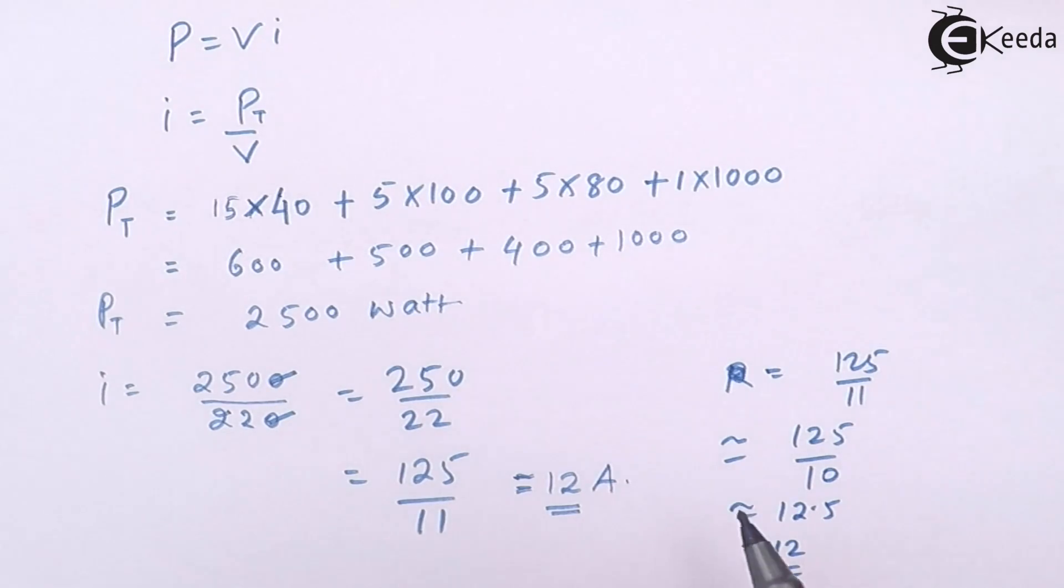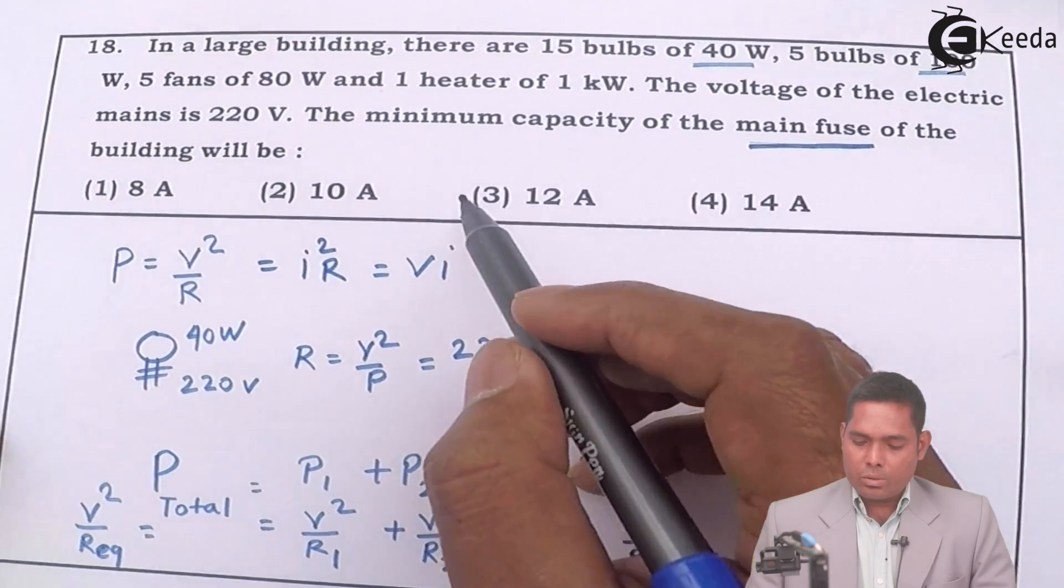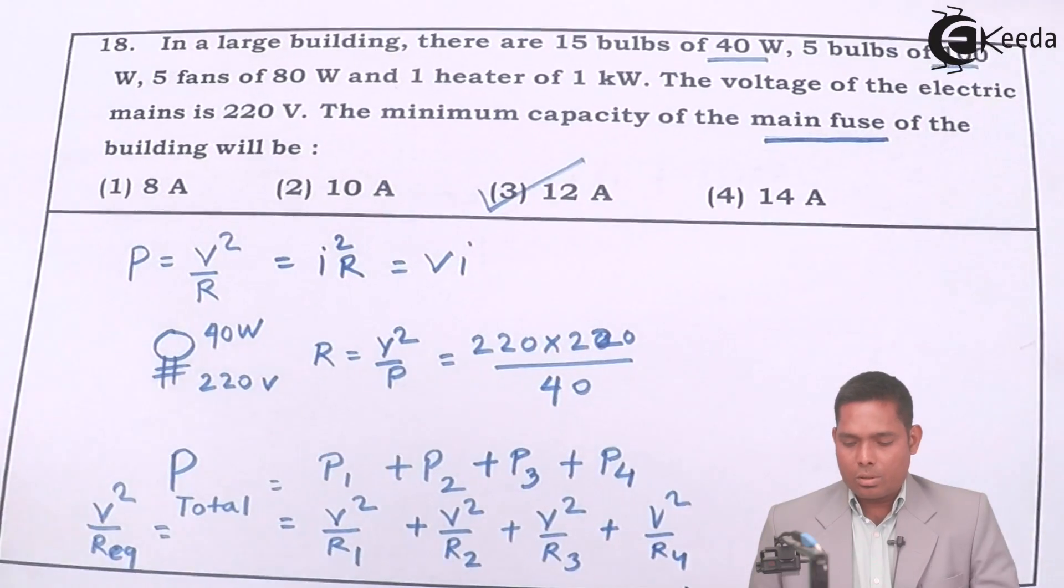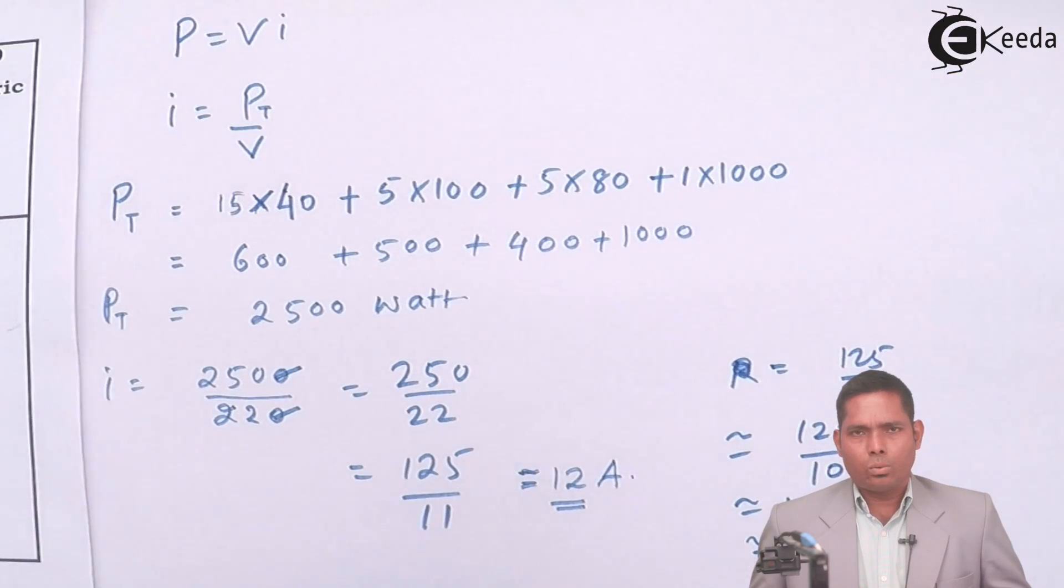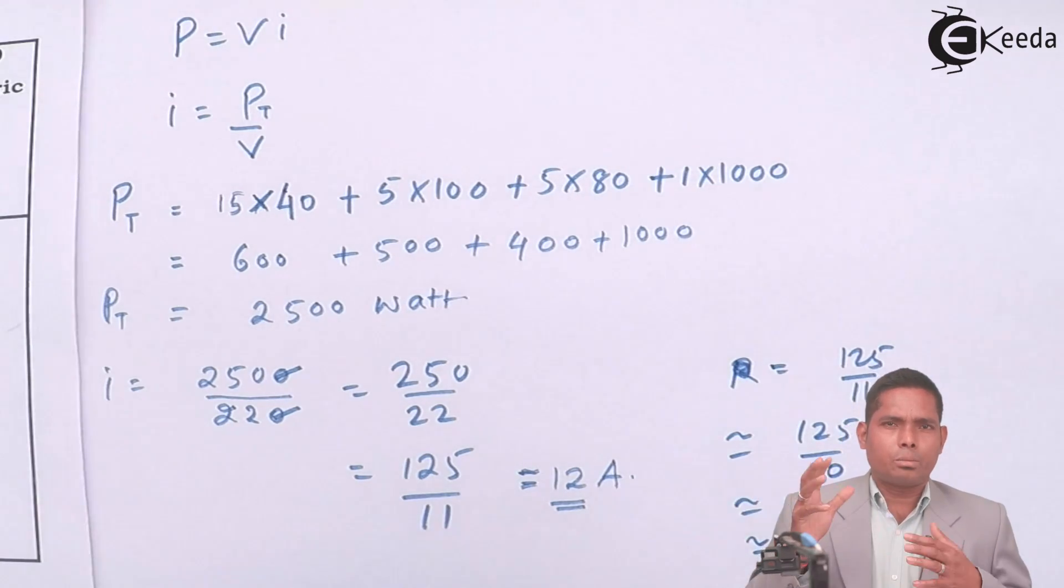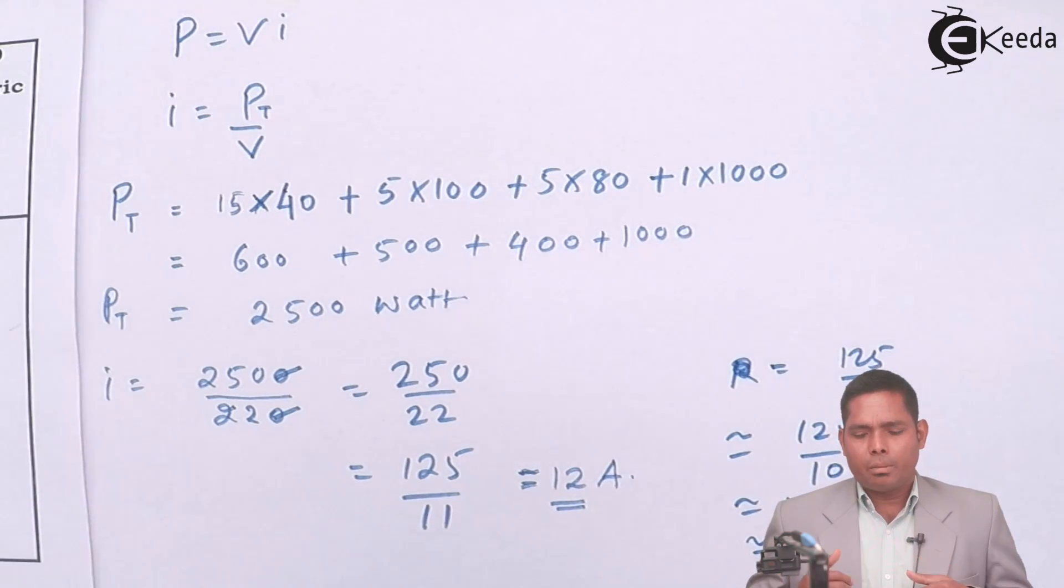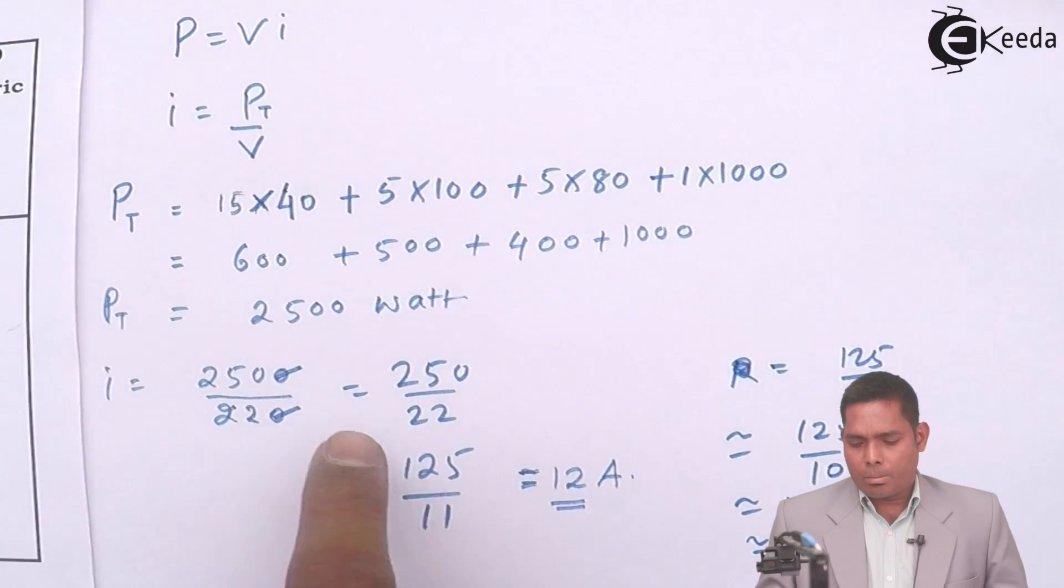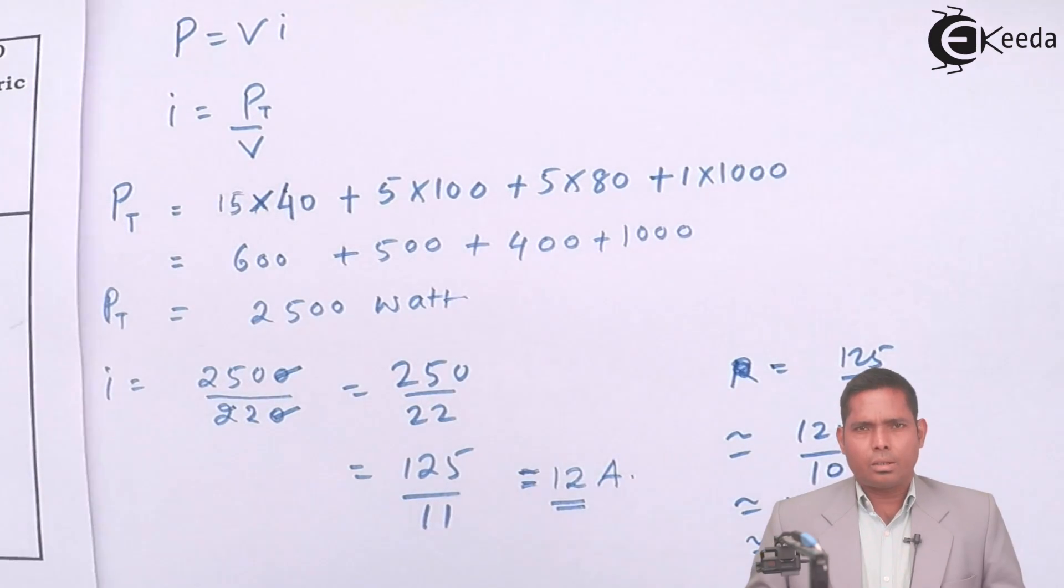Approximately this is 12 amps. So therefore, if you see the options, the correct answer to this is 12 amps. What we have done is basically to find the total power drawn by all the elements. And because they are connected in parallels, you have to find the total power. If they are in parallel, then you have to add all the powers P1, P2, P3, and all. Then use the formula P equals to VI. From that, you get I equals to P by V. So total power divided by V is the supply 220 and you will get answers.